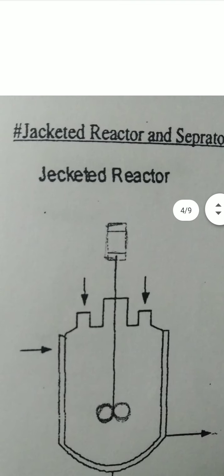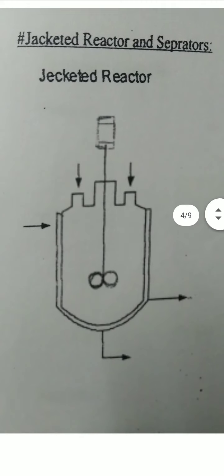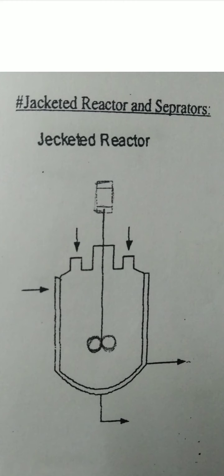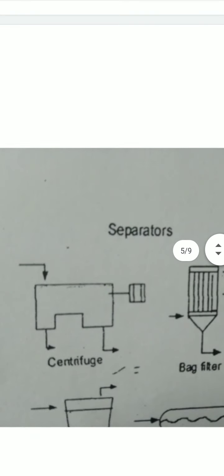Next, the jacketed reactor and separators. In the jacketed reactor, there is an outer protection jacket drawn around the vessel, with a stirrer inside. There is a closed system with pressure conditions. The heat enters through the jacket enabling the required reaction temperature.